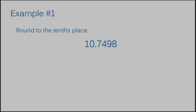Example number one: round to the tenths place. We have the number 10 and 7,498 ten-thousandths. We need to round to the tenths place. Don't forget, we're talking about the tenths place, not the tens place. If you see a -THS at the end of a place value name, that is very important.